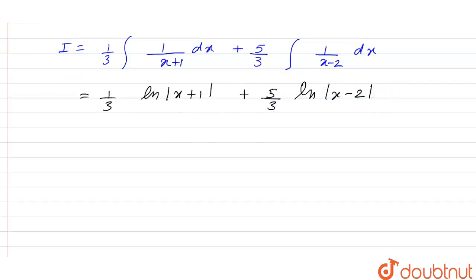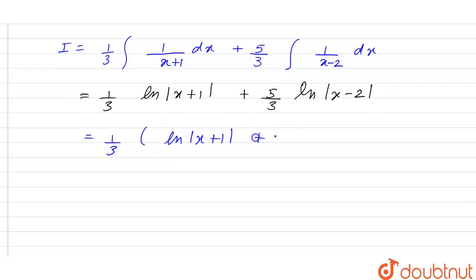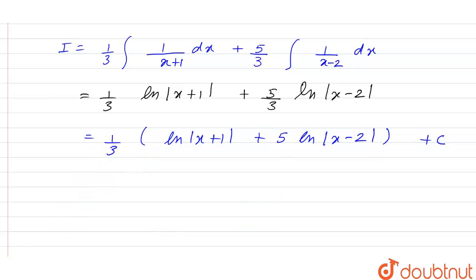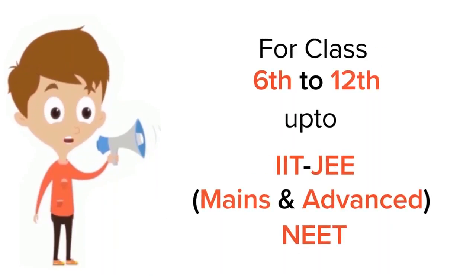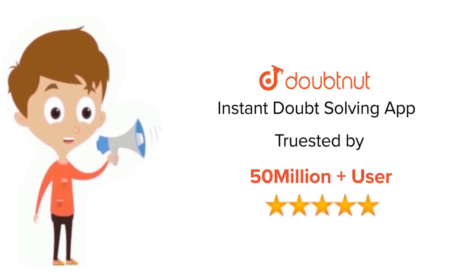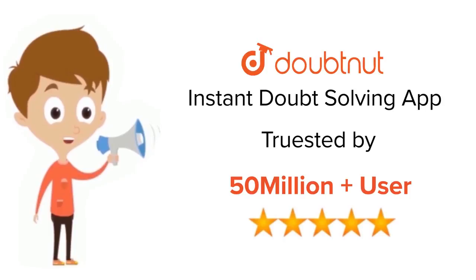So we have (1/3) common, giving ln|x+1| + 5 times ln|x-2|, plus C, the constant of integration. This will be the final answer. Thank you. For class 6–12, IIT JEE, and NEET level, trusted by more than five crore students — download DoubtNet today.